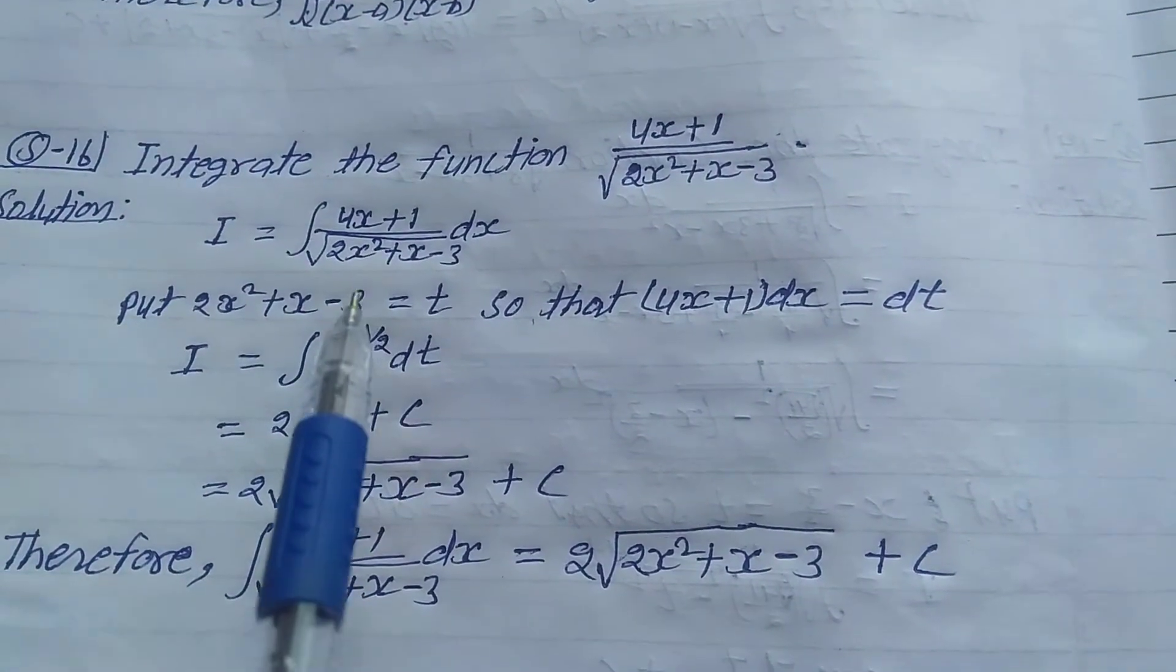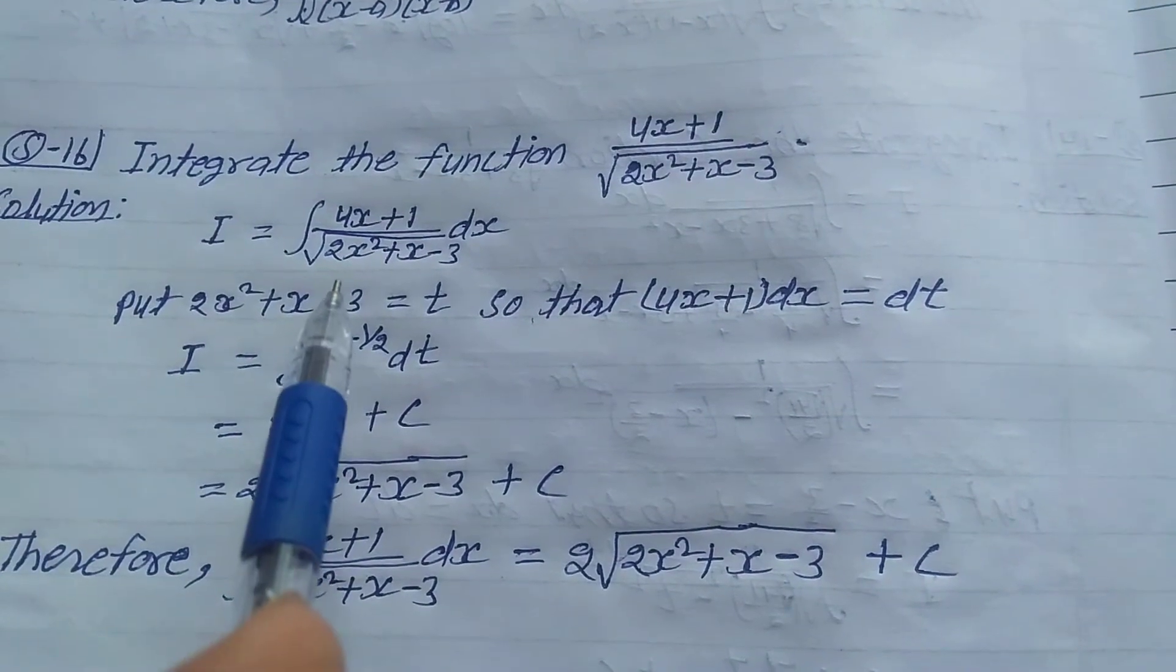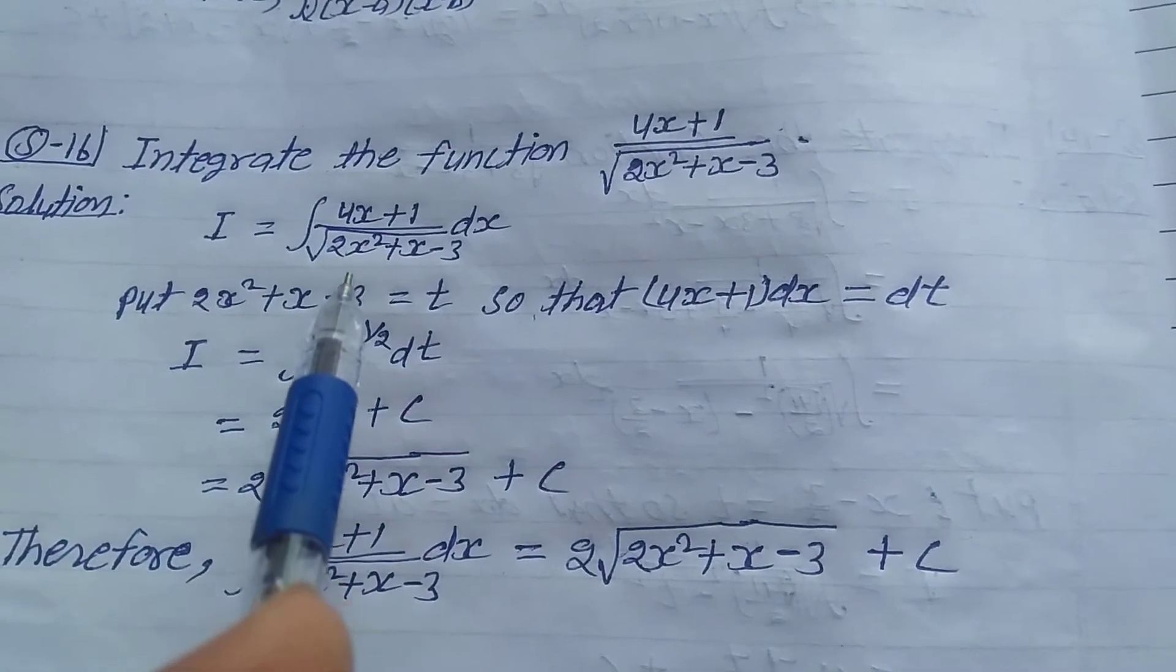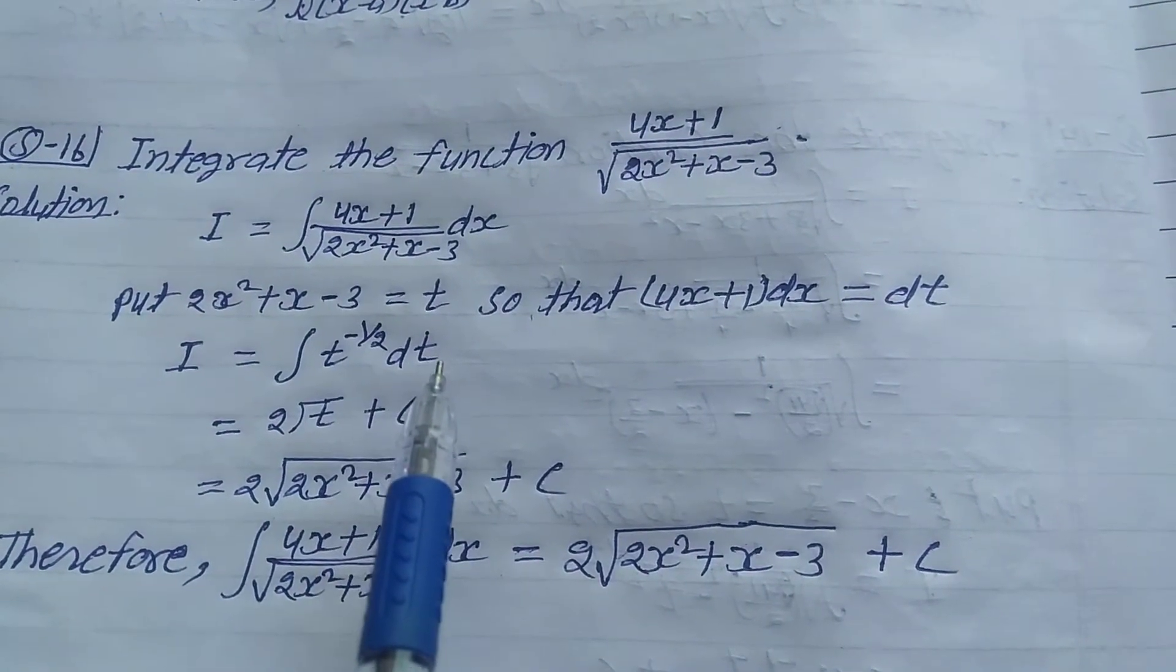Put these values here. I equals integration of 1 upon root of t, which is also written as t power of -1/2 dt.